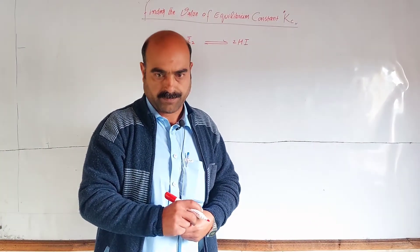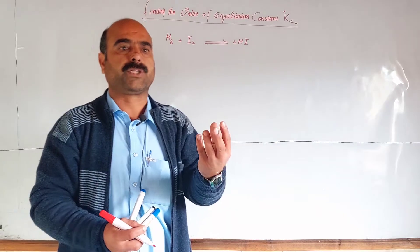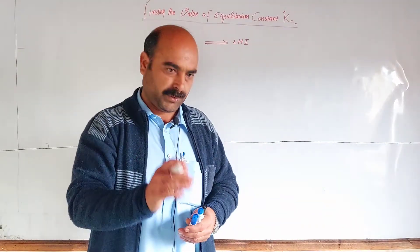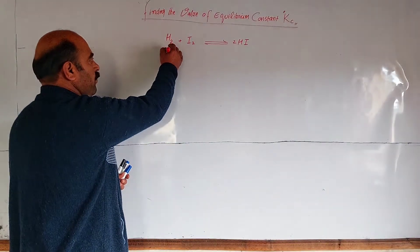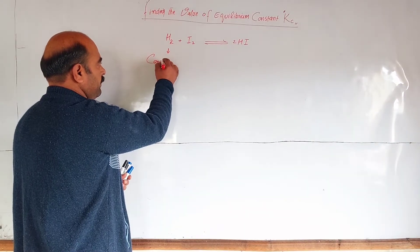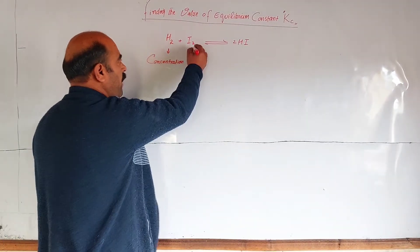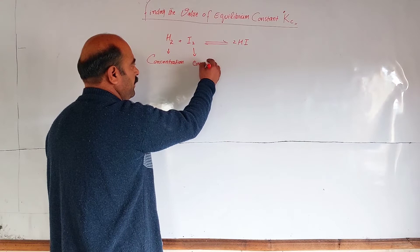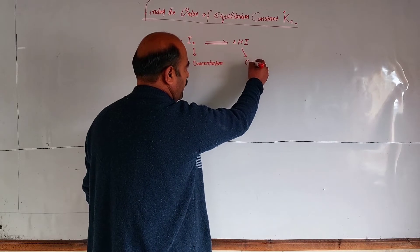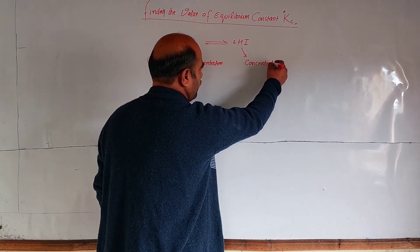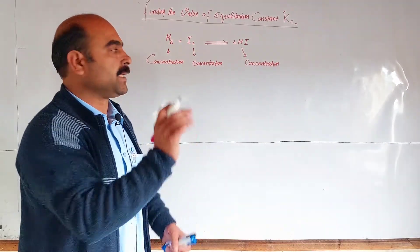At equilibrium state, we take a sample and analyze it. Through analysis, we find that hydrogen concentration is certain moles per decimeter cubed, iodine concentration is certain moles per decimeter cubed, and hydrogen iodide concentration is also determined. We will put these values into the equation, the general form of the law of mass action.